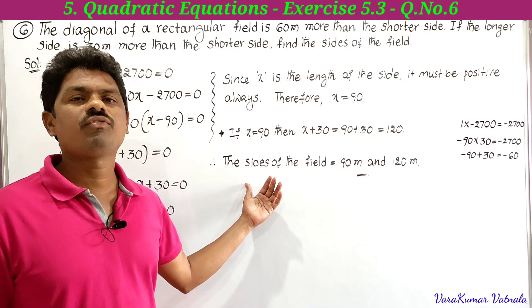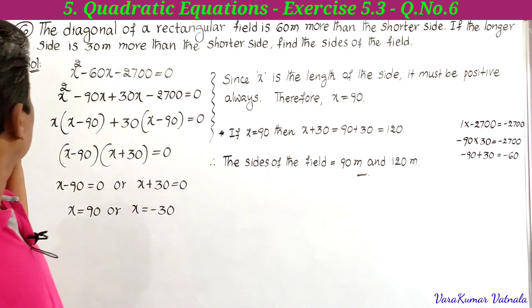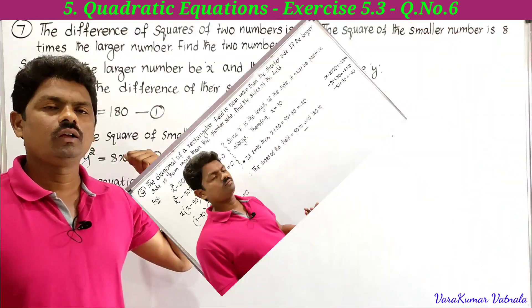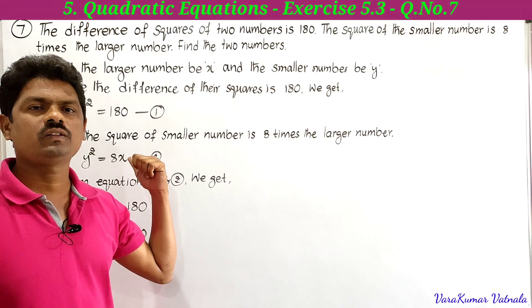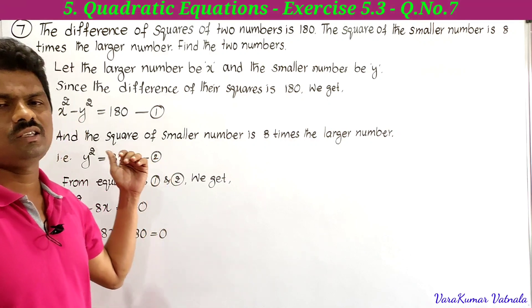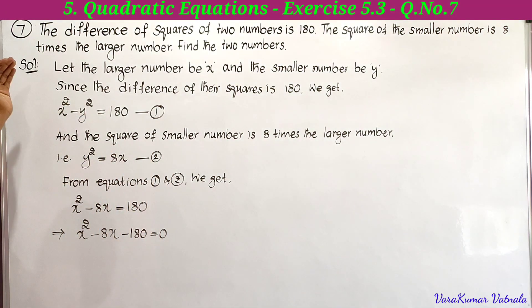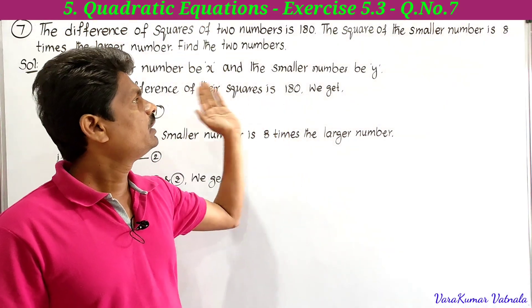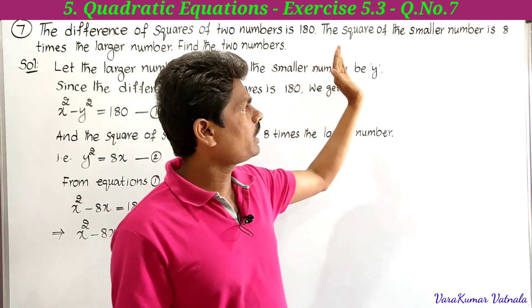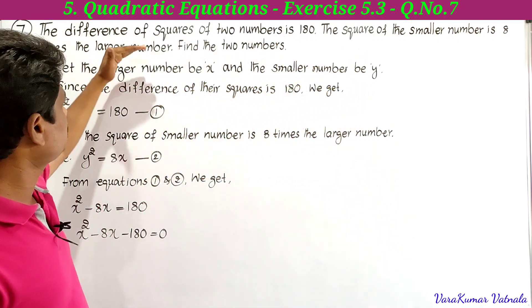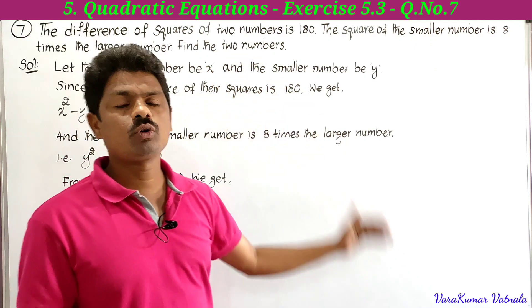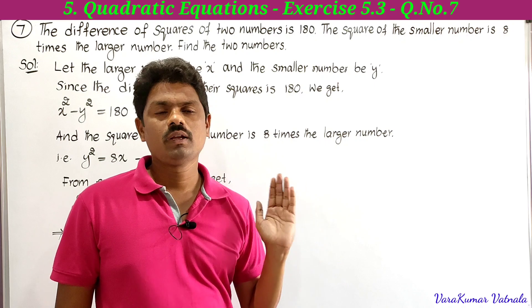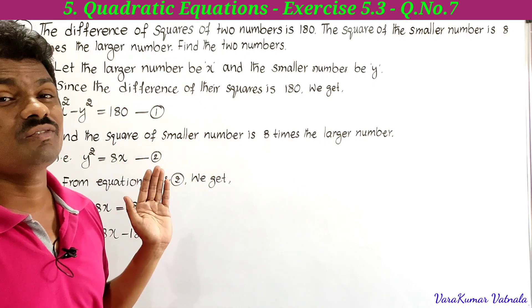That completes the sixth problem of Exercise 5.3. Now we move to the seventh problem. The problem states: the difference of squares of two numbers is 180, and the square of the smaller number is 8 times the larger number. Find the two numbers.